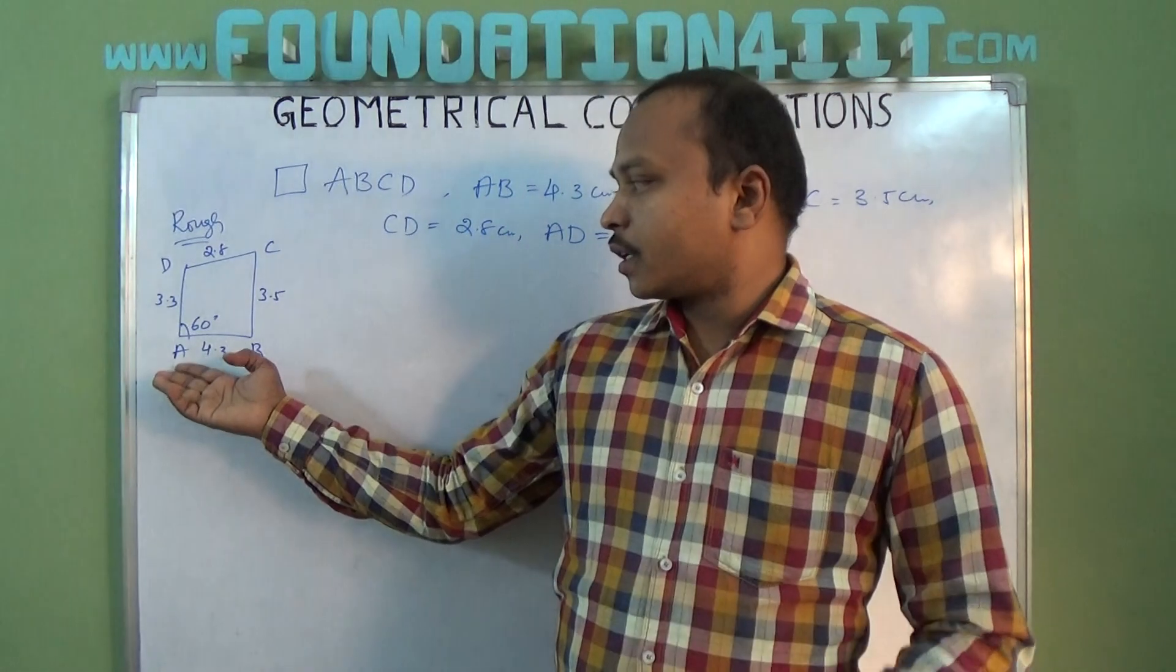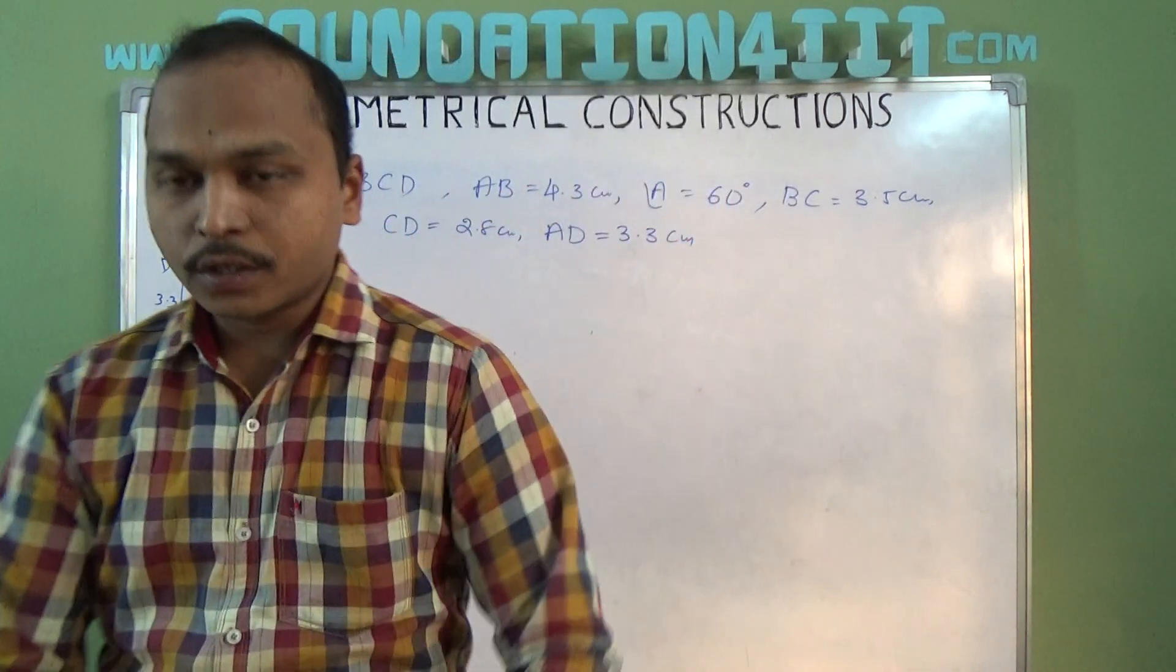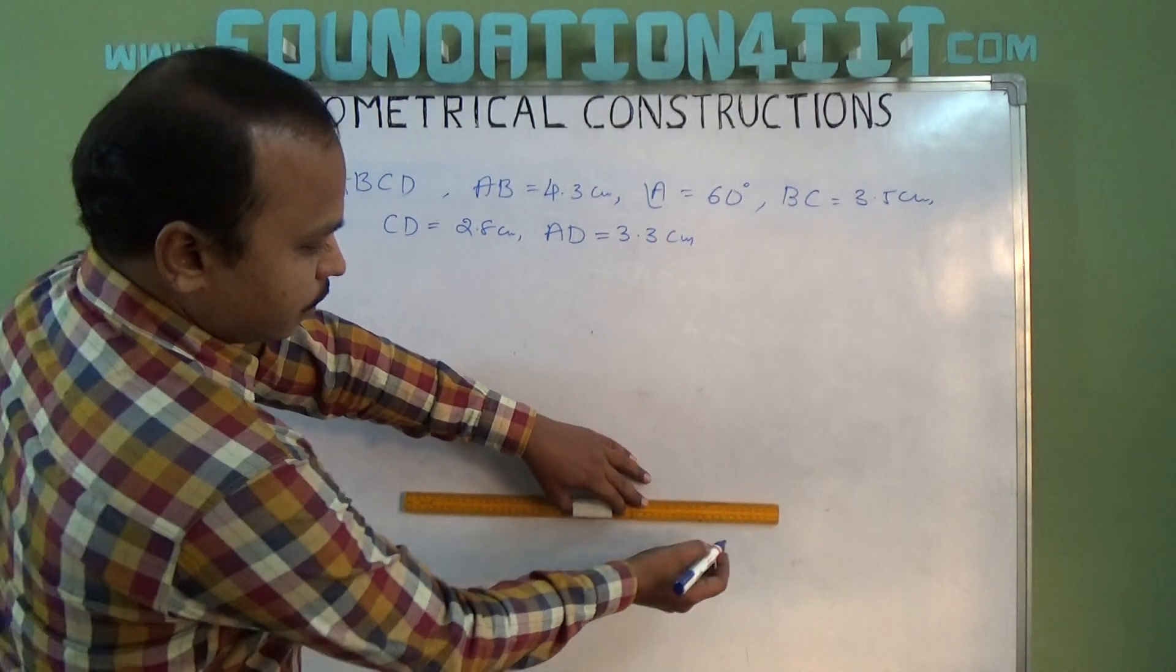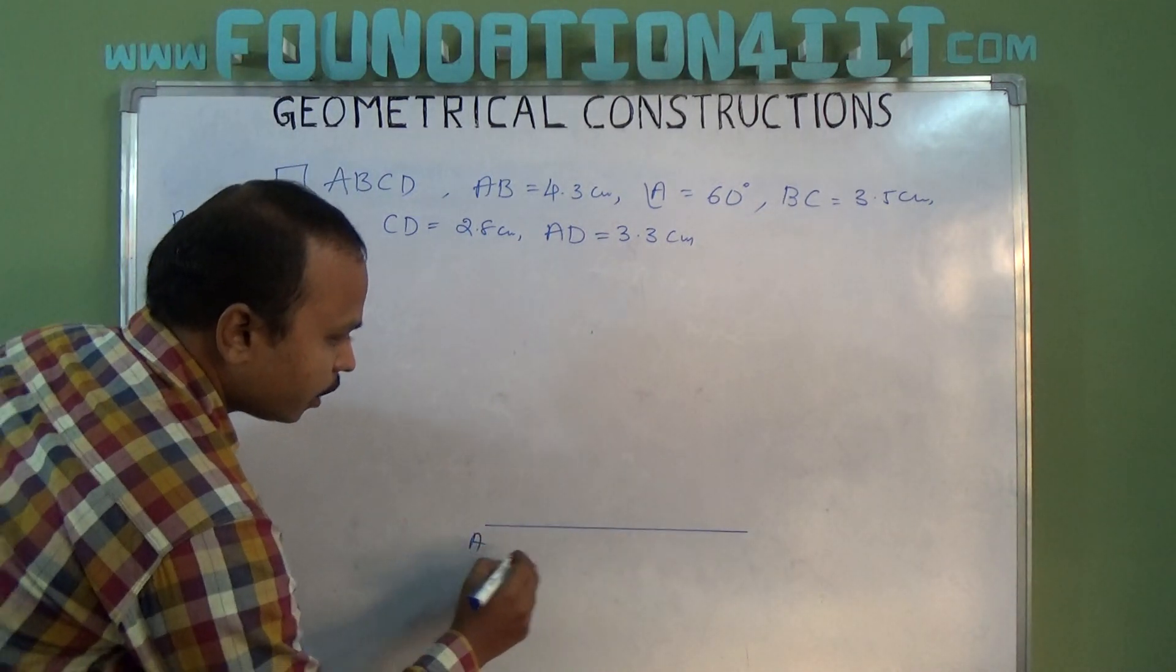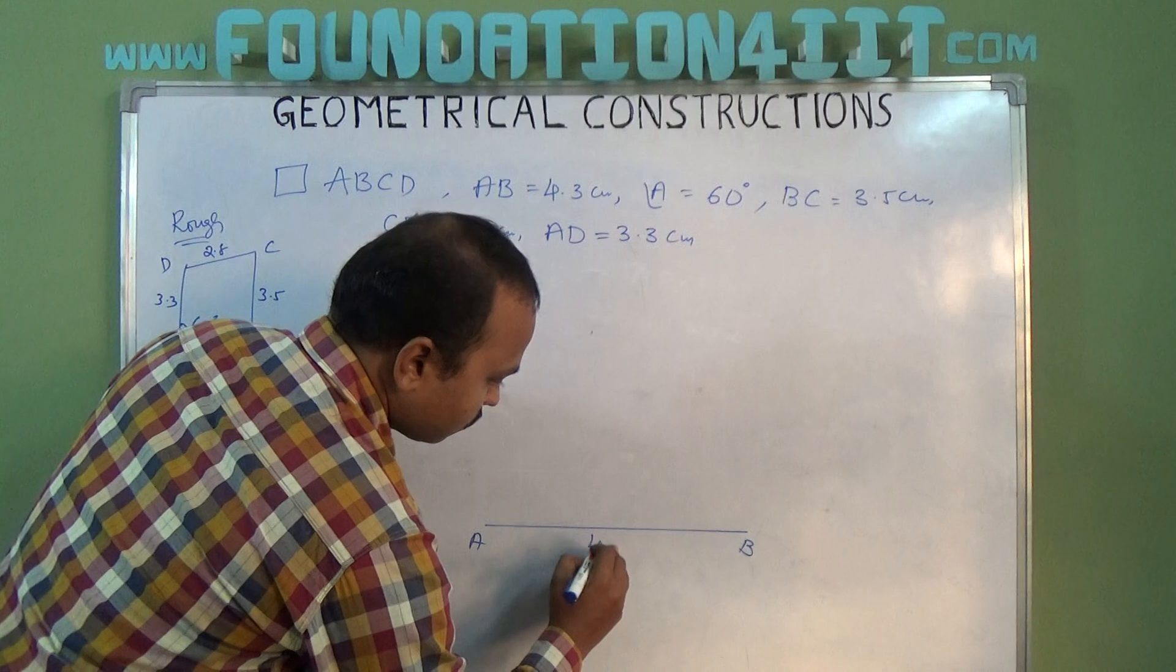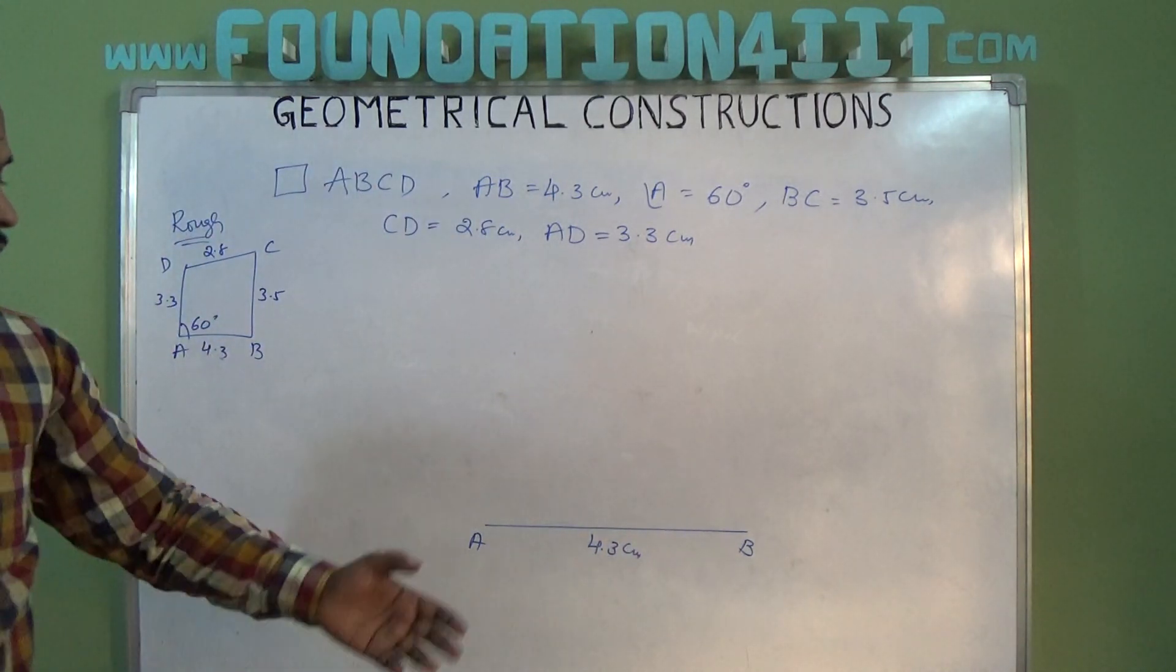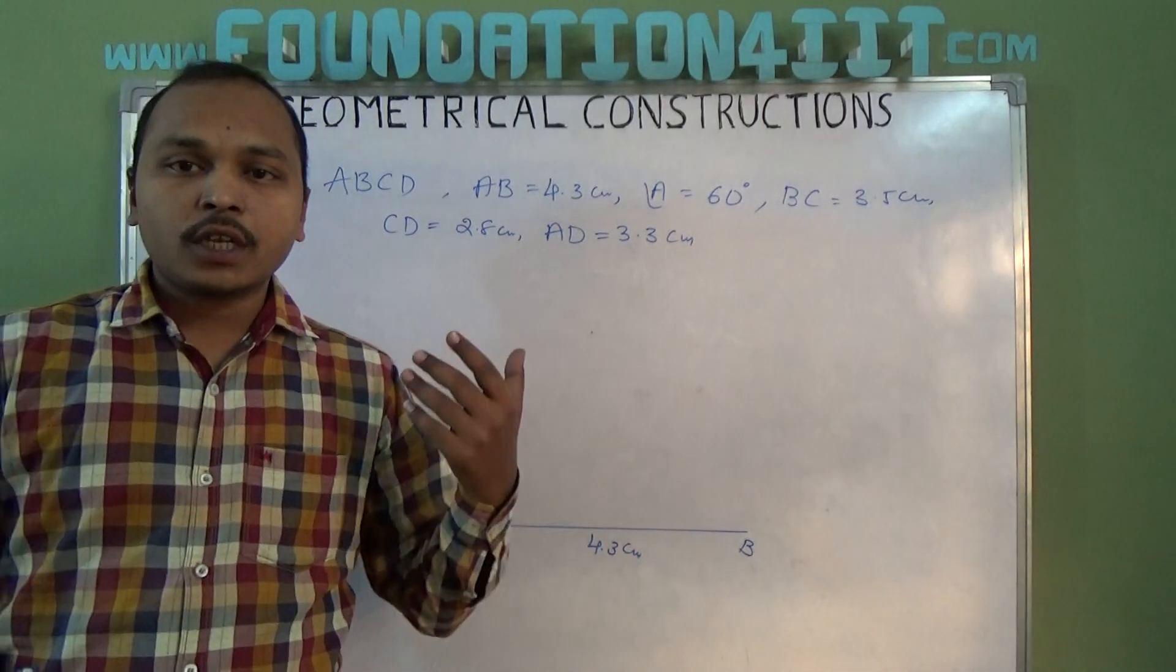First of all, we will construct the base: 4.3 centimeters, so AB. Using the scale, take 4.3 centimeters first. A to B is 4.3 centimeters, the known value.